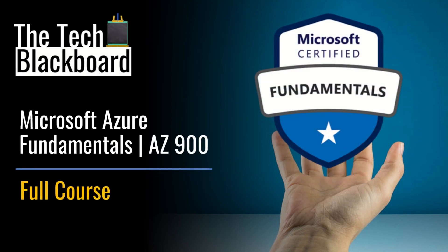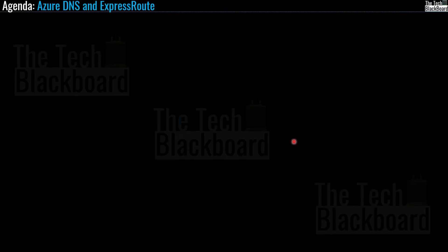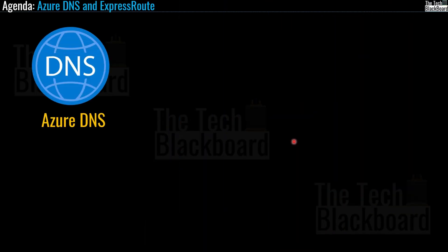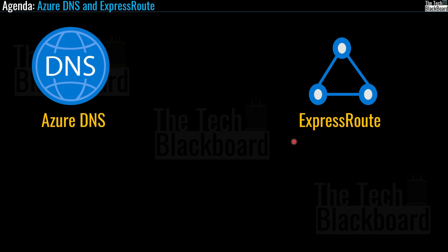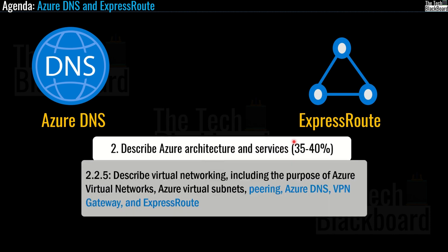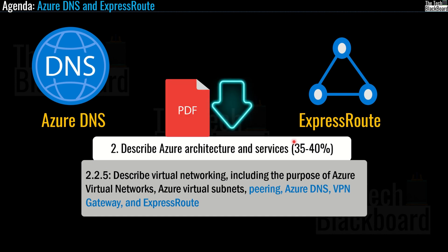Hello and welcome back to the Tech Blackboard. Welcome to our free learning series on Azure Fundamentals. In this video we will talk about Azure DNS and Azure ExpressRoute. Please note that this is section 2.2.5, which is a subset of section 2, holding 35 to 40 percent of the AZ-900 exam. You can download a free PDF file with section-by-section marking completely synced with our videos and the Microsoft AZ-900 Azure Fundamentals exam course.